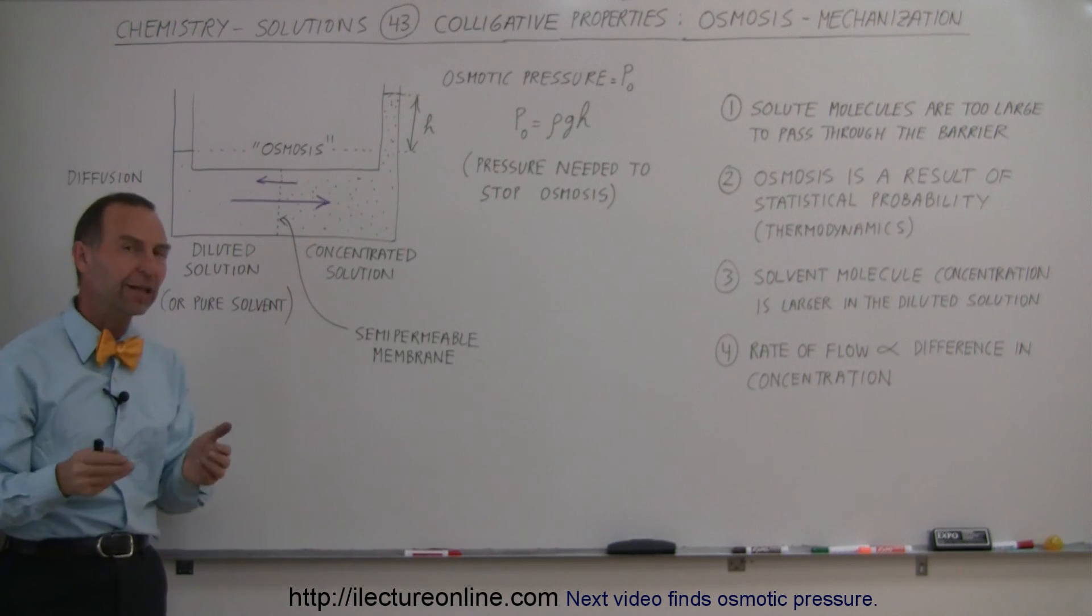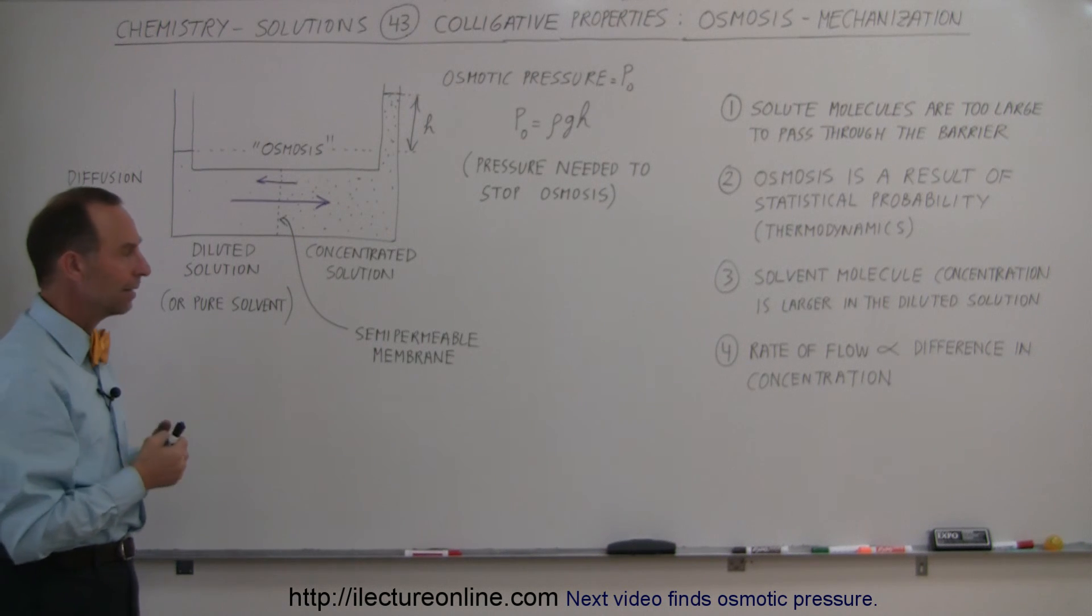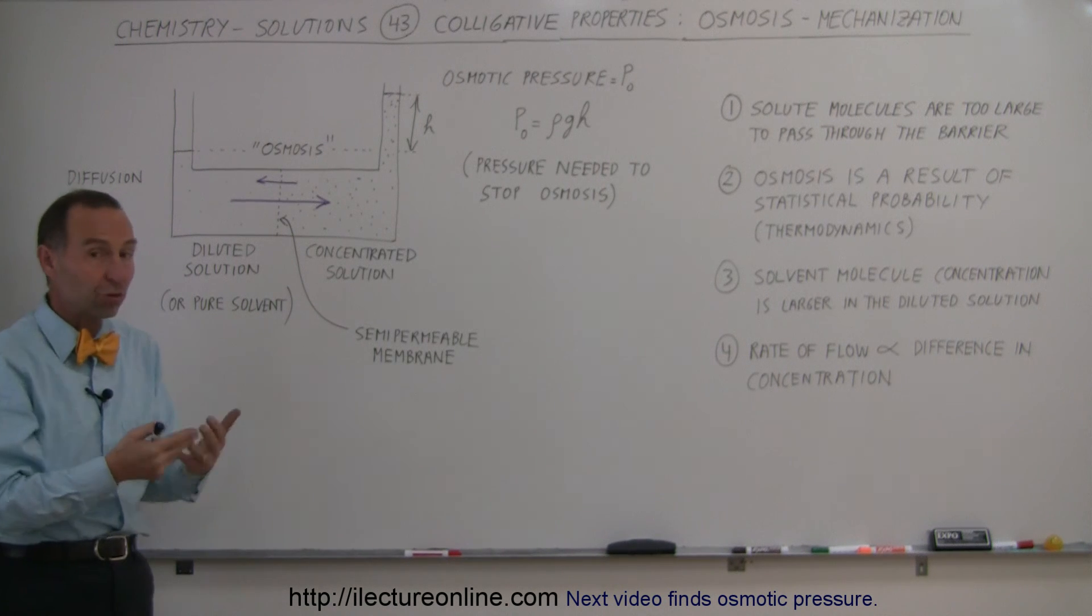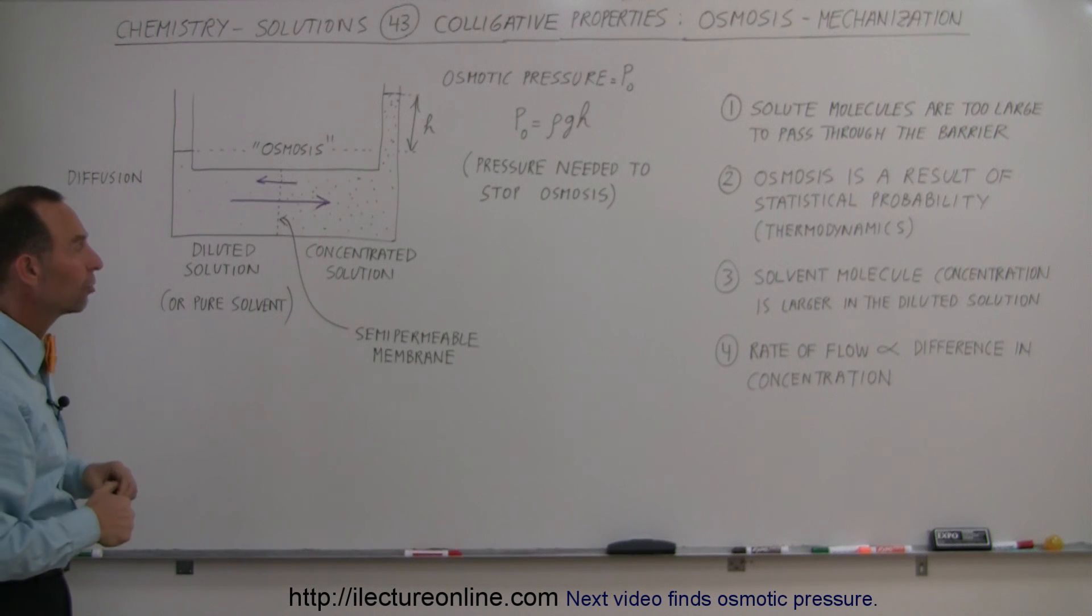It turns out, as you will find out in later videos, that osmotic pressure can be absolutely enormous, and that is what enables trees to grow and trees to get water to the leaves high up in their branches. We'll see later on why that is the case.